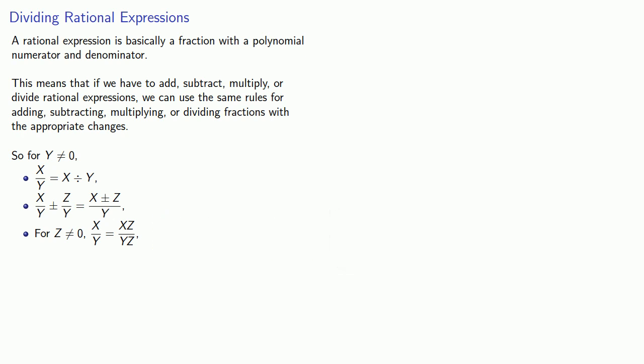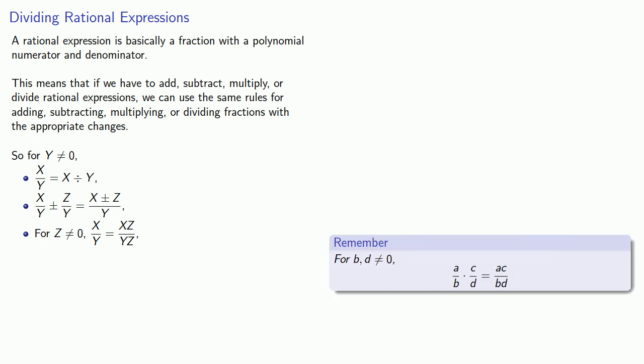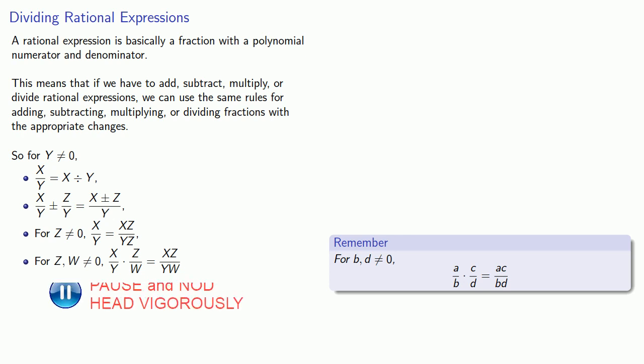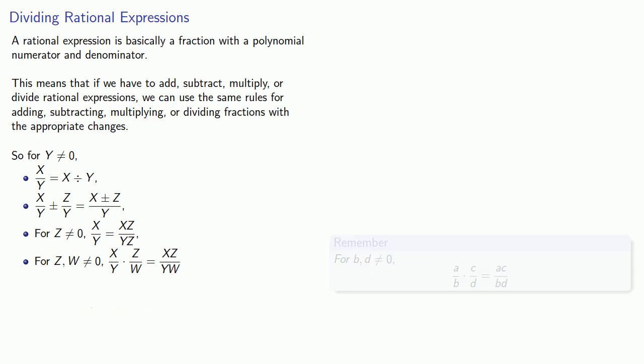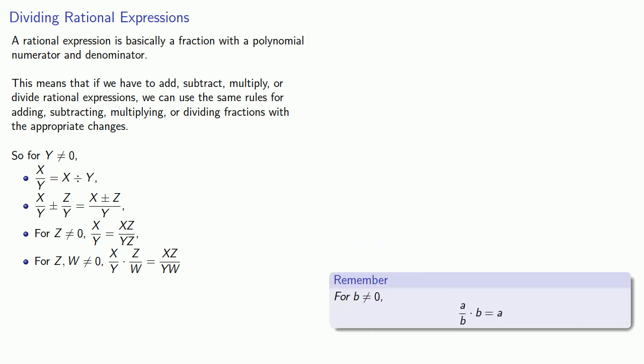If I want to multiply two fractions, I get the product of the numerators as the new numerator and the product of the denominators as the new denominator. With rational expressions, we have the radically different rule — well, actually, it's the same rule. A useful thing to keep in mind: if I multiply a fraction by its denominator, I'll be able to remove that denominator and be left with just the numerator. We can do the same thing with rational expressions.